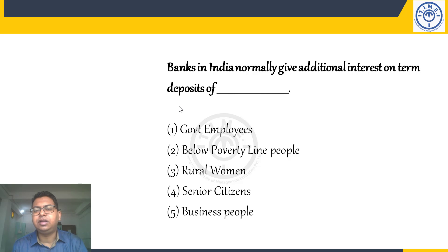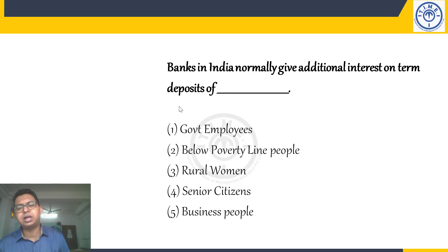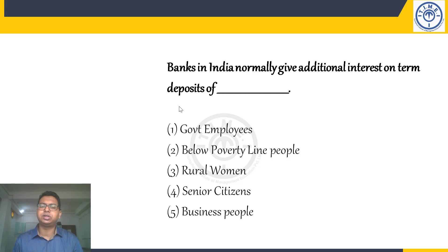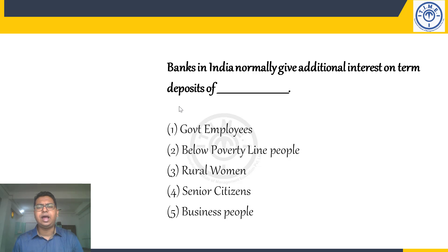Banks in India normally give additional interest on term deposits. There are two types of deposits: demand deposits and term deposits. Demand deposits include savings accounts and current accounts, where the customer can withdraw money whenever they demand it. A term deposit is where the depositor gets the money after a pre-decided time period — maybe six months, one year, or two years. Under term deposits, we have fixed deposits and recurring deposits.